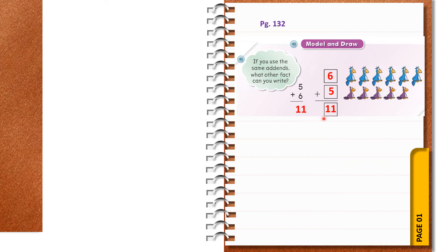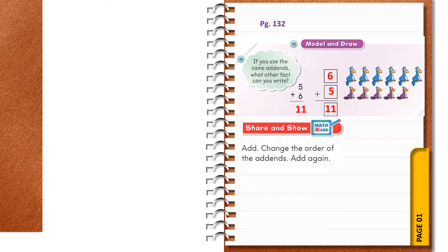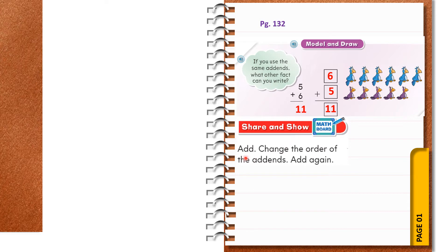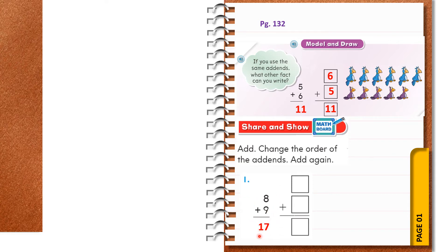Share and Show: add, then change the order of the addends and add again. First one: eight plus nine. You can draw the counters and find the sum — the addends are eight and nine, and when you add you will get seventeen. Now let's change the order and write the sum: eight plus nine becomes nine plus eight.